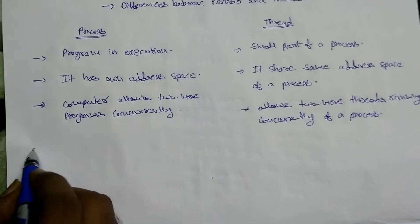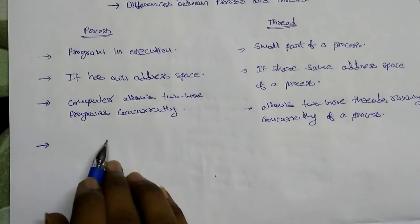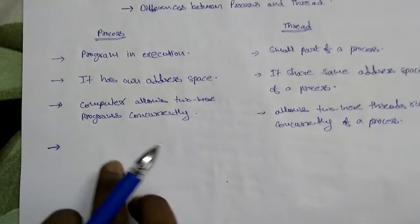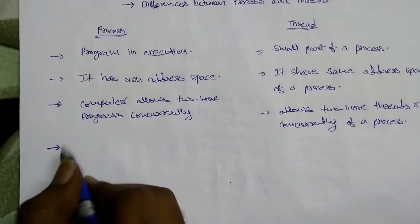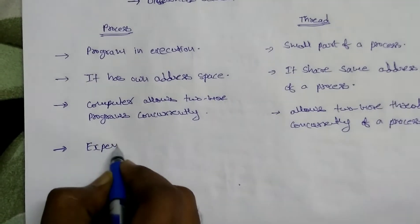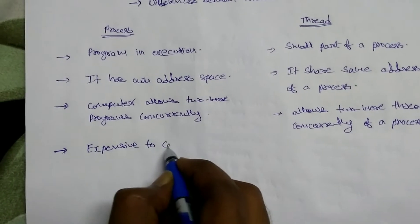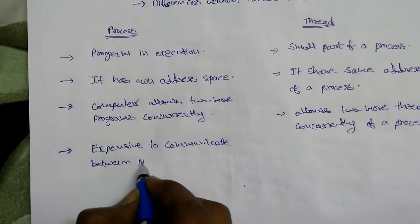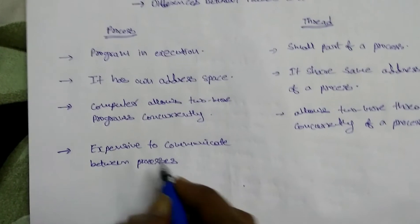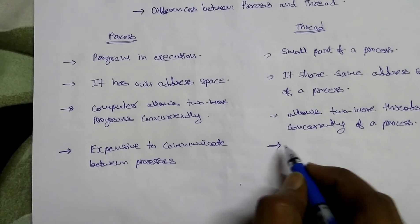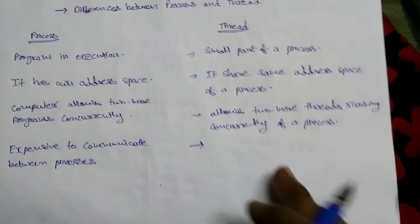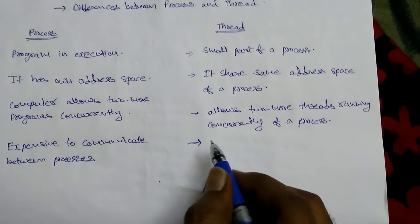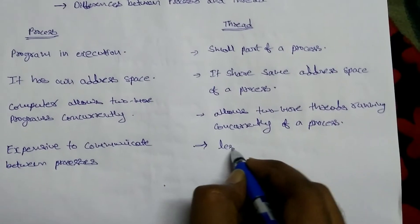If you look at communication between processes, it is very difficult and expensive because every process has a separate virtual memory and separate address space. But for threads, it is very easy to communicate between threads because they share the same address space of a process. Using shared data segments, we can easily communicate between threads — it is less expensive.